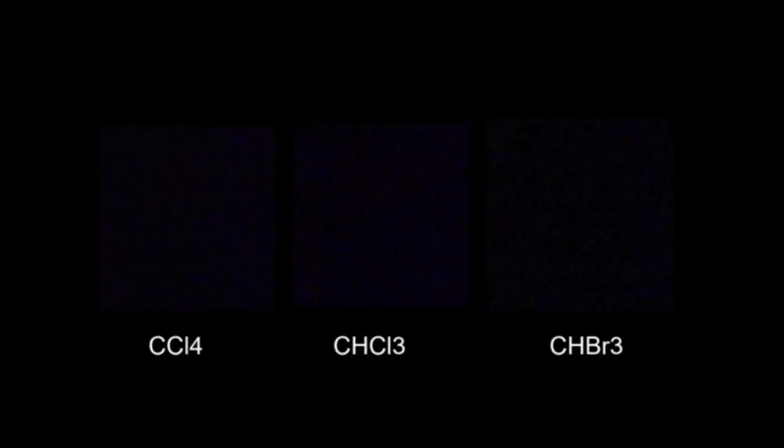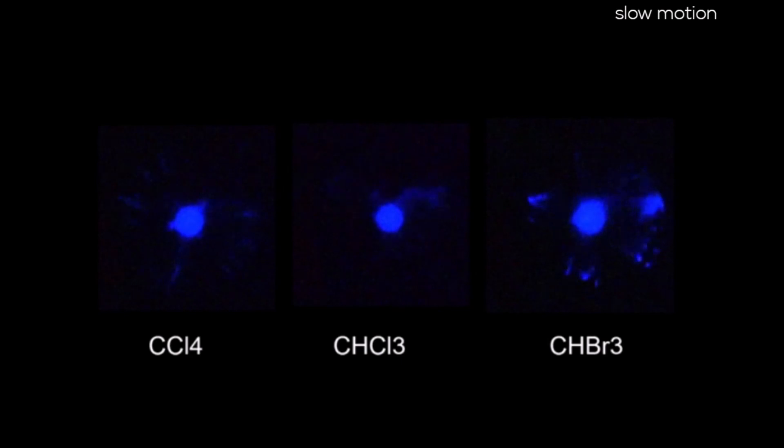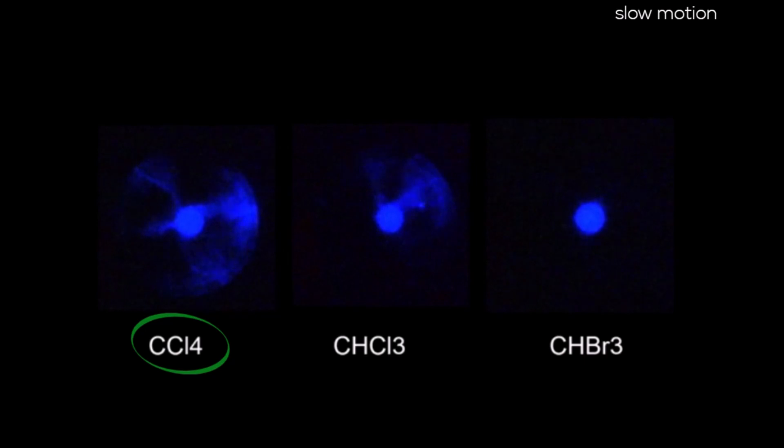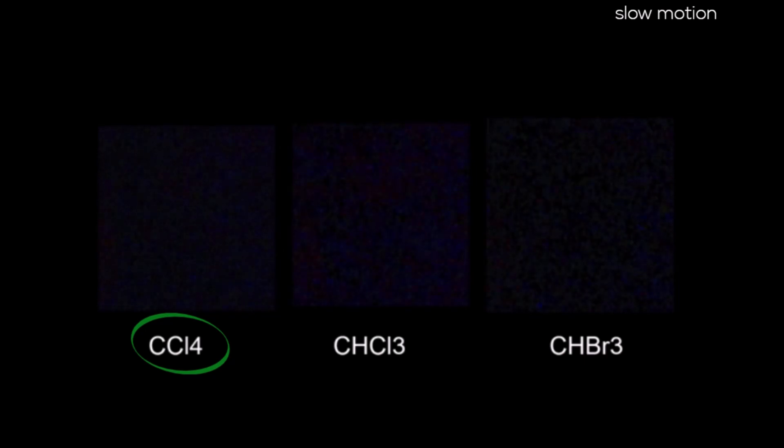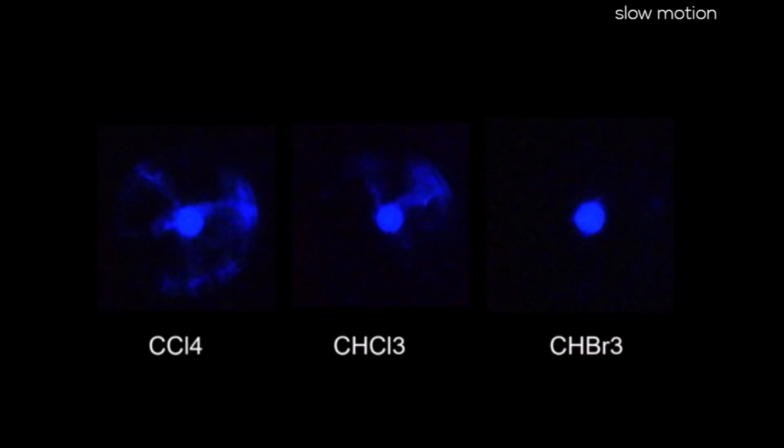Now, this slow motion video of the first moments of sonochemiluminescence. We can see the effect of using three different activators for the oxidation reaction of luminol. When using carbon tetrachloride, an intense emission of light is observed, because the generated species reach to diffuse in the vessel oxidizing the luminol.